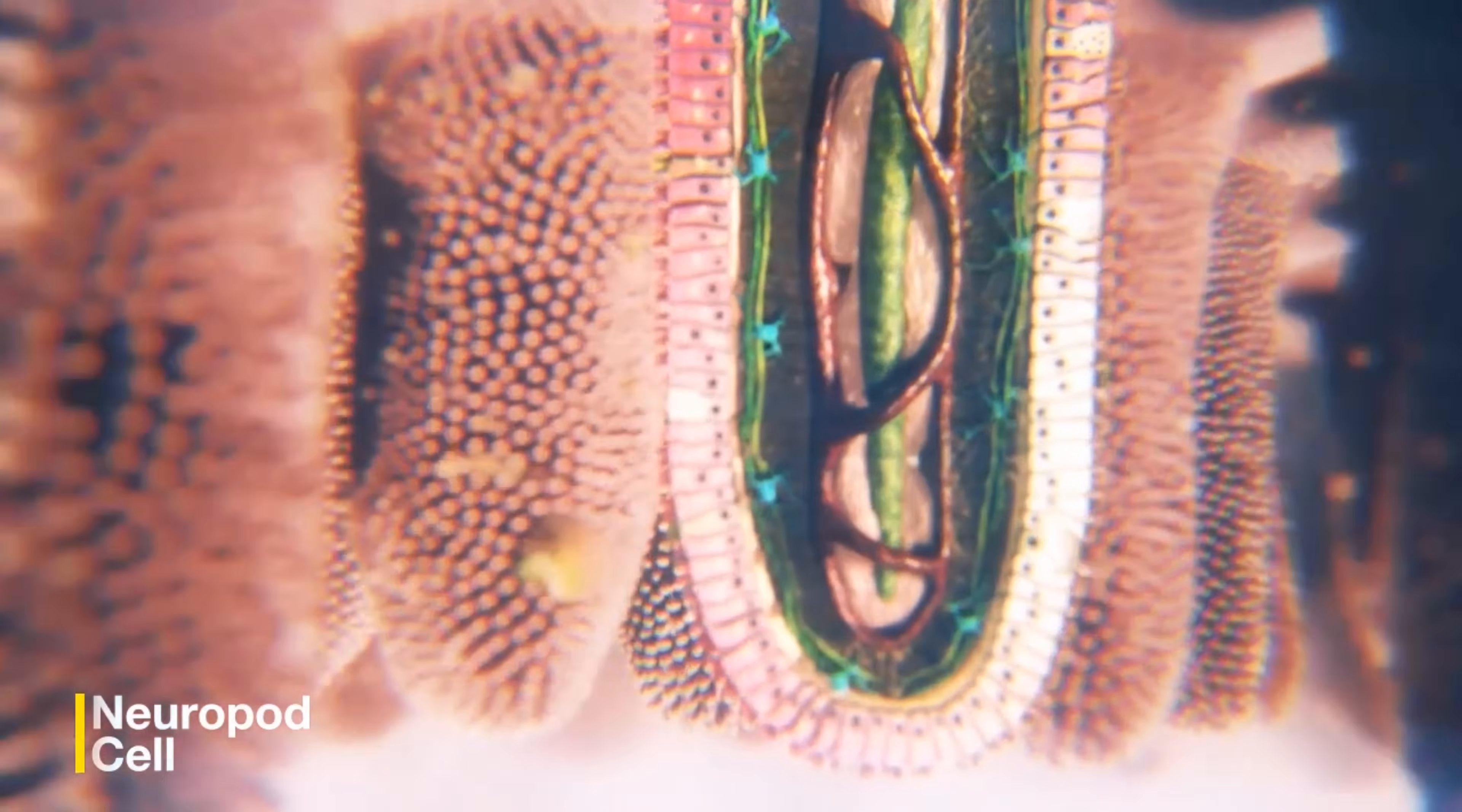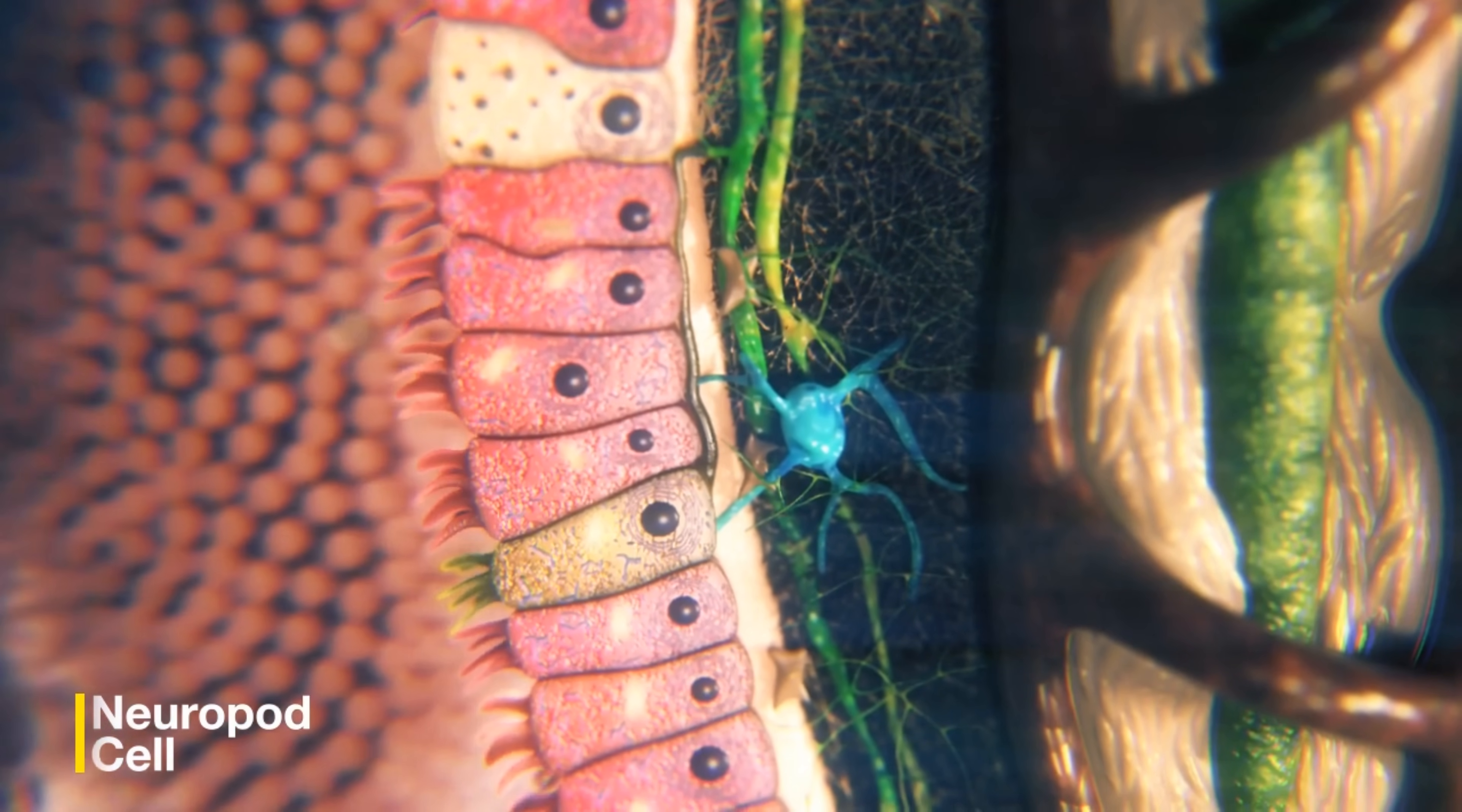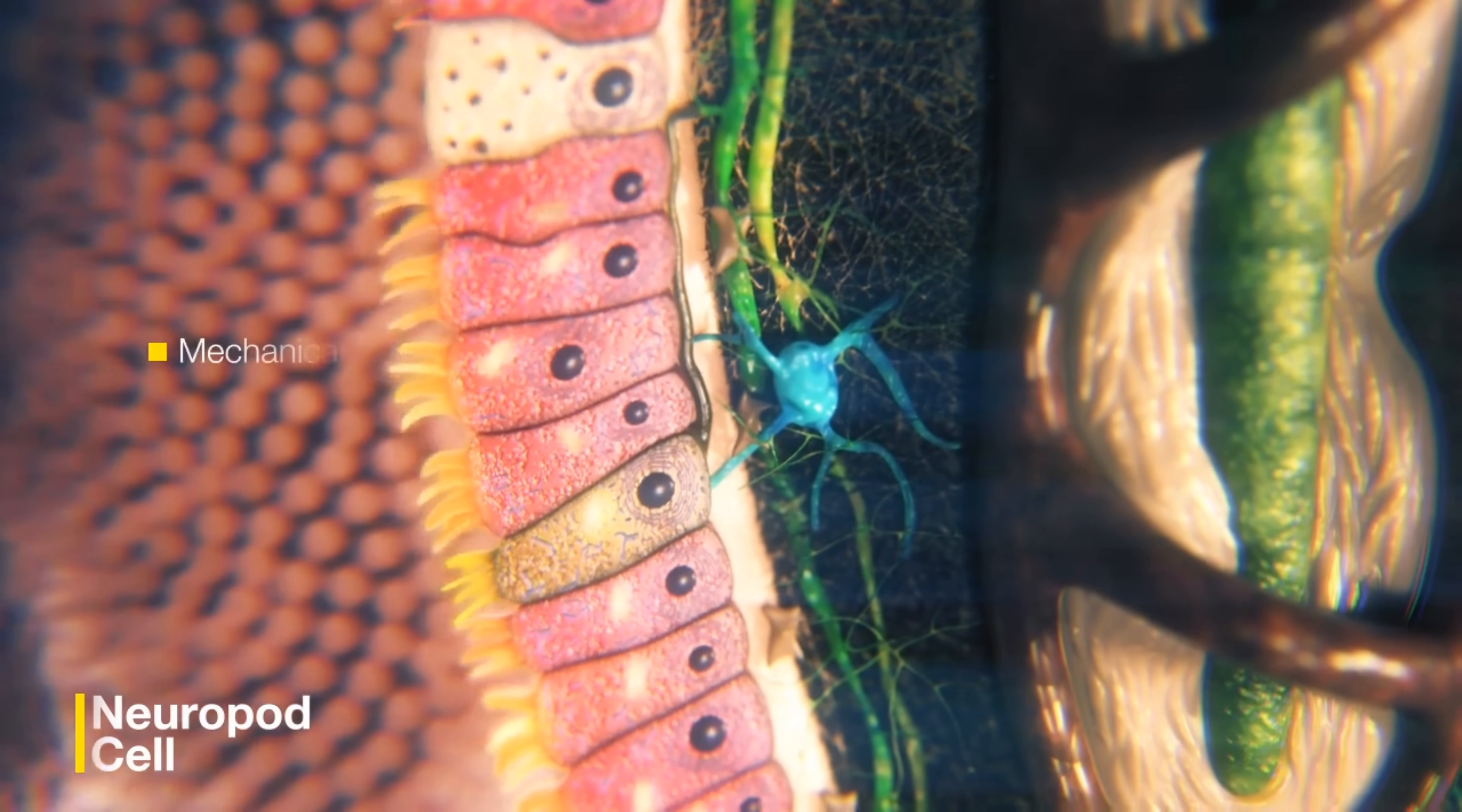In addition to communicating through hormones, we discovered that enteroendocrine cells also synapse with nerves, including the vagus nerve. We call those enteroendocrine cells synapsing with nerves neuropod cells. They sense and react to their environment.